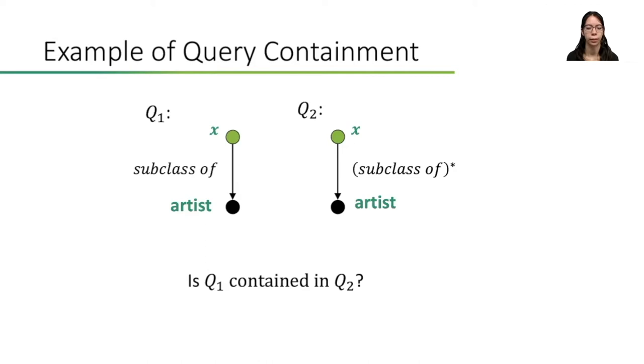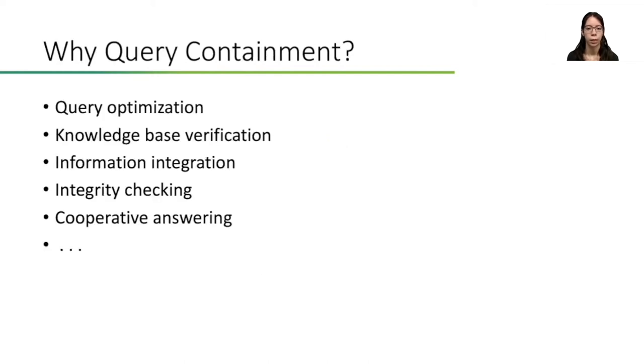To better understand this definition, let's have a look at an example. Given a query Q1 asking for direct subclasses of artist and a query Q2 asking for transitive subclasses of artist, if we want to find out whether Q1 is contained in Q2, we have to look at the outputs of Q1 on arbitrary databases. Since every direct subclass of artist is also a transitive subclass of artist, every output of Q1 will also be in the output of Q2. So, Q1 is indeed contained in Q2.